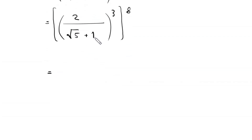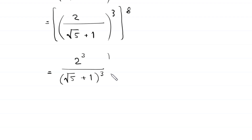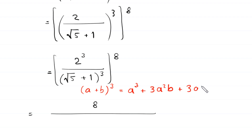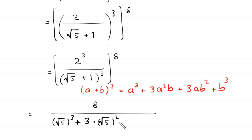Next, this 2 over root 5 plus 1, whole cubed, becomes 2 cubed divided by root 5 plus 1 whole cubed, all to the power 8. Using the algebraic identity (a+b)³ = a³ + 3a²b + 3ab² + b³, root 5 plus 1 whole cubed expands to root 5 cubed plus 3 times root 5 squared times 1, plus 3 times root 5 times 1 squared, plus 1 cubed.